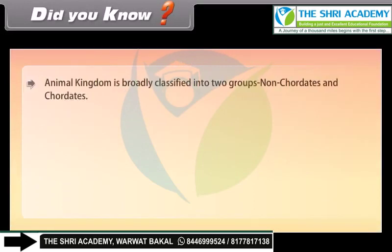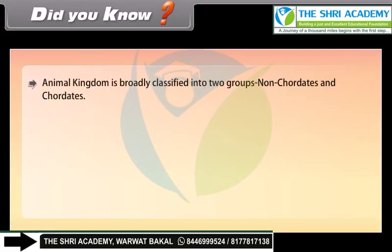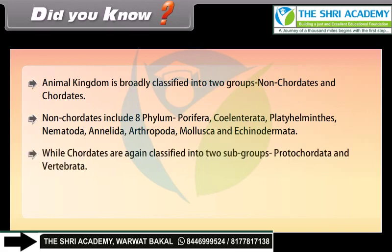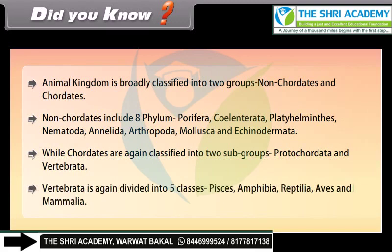Animal Kingdom is broadly classified into two groups: Non-Chordates and Chordates. Non-Chordates include 8 phyla: Porifera, Coelentrata, Platyhelminthes, Nematoda, Annelida, Arthropoda, Mollusca, and Echinodermata. Chordates are again classified into two subgroups: Protochordata and Vertebrata. Vertebrata is again divided into five classes: Pisces, Amphibia, Reptilia, Aves, and Mammalia.